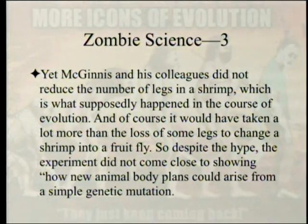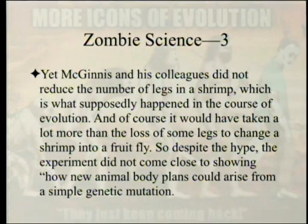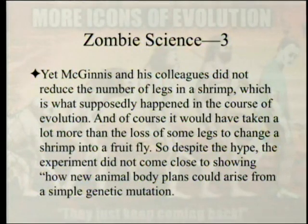Despite the hype, the experiment did not come close to showing how new animal body plans could arise from a simple genetic mutation. It would have taken far more than the loss of some legs to change a shrimp into a fruit fly. If two mutations could convert a shrimp UBX into an insect UBX, that might qualify as 'simple' — but if it requires 200 mutations, that is not simple at all.